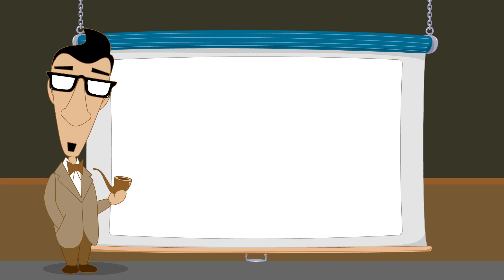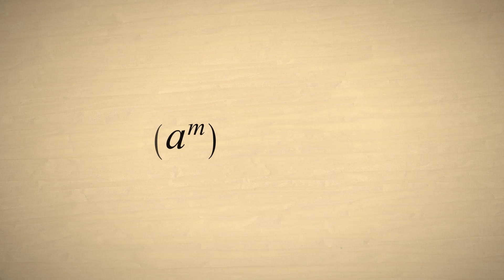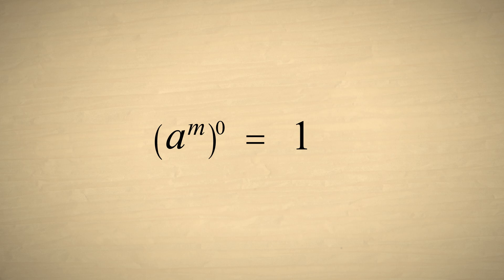Now, what do you think would happen if we raise an exponential term to the zero power? If we raise any exponential term to the zero power, when we multiply the exponents, the result will always have an exponent of zero, so the result will always be equal to one. Just like numbers and variables, any exponential term raised to the zero power is equal to one.